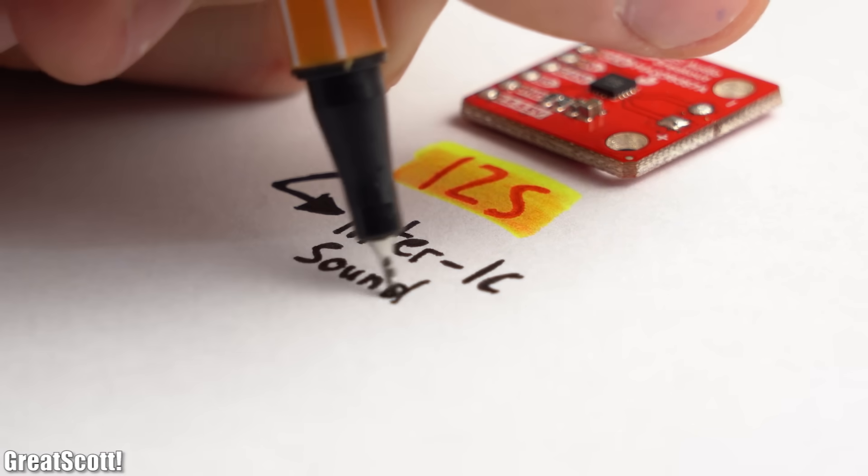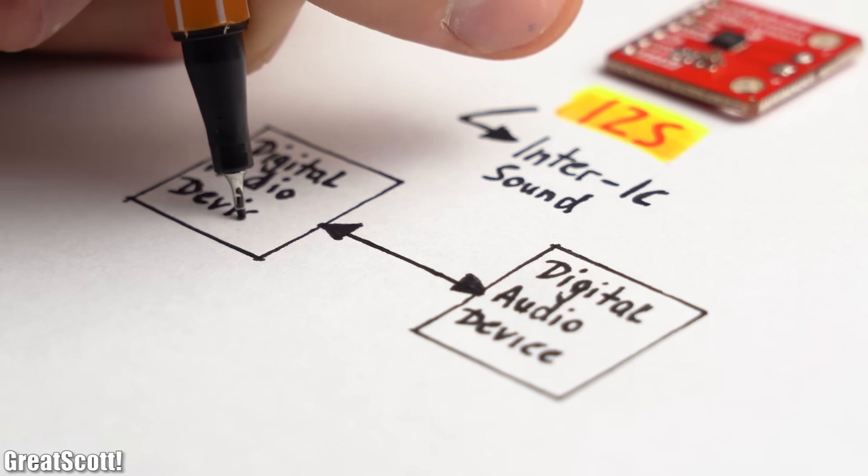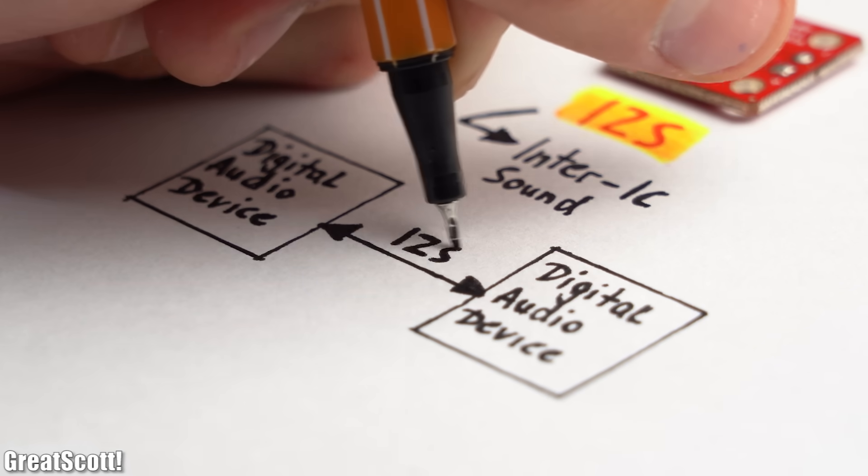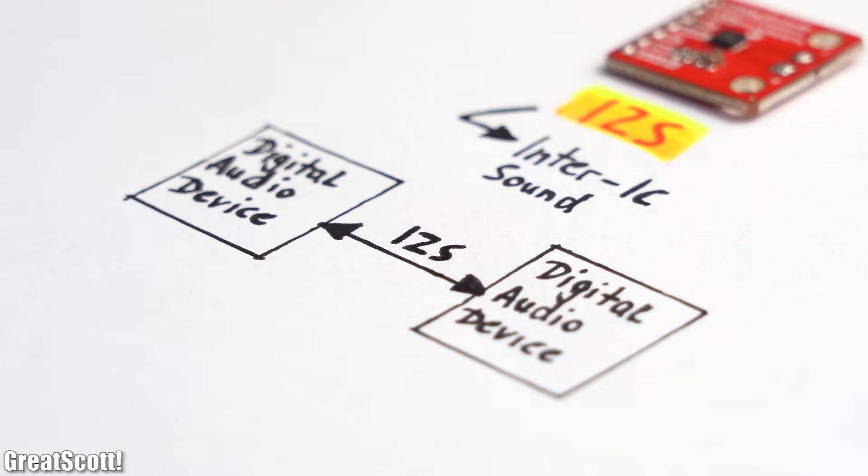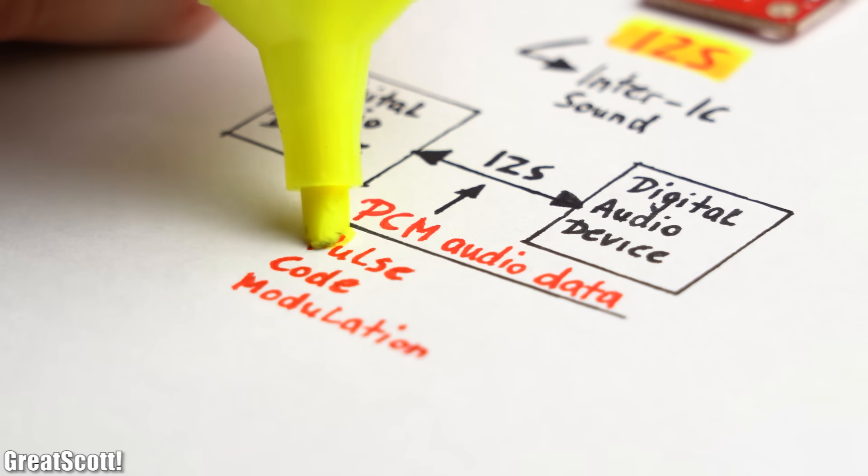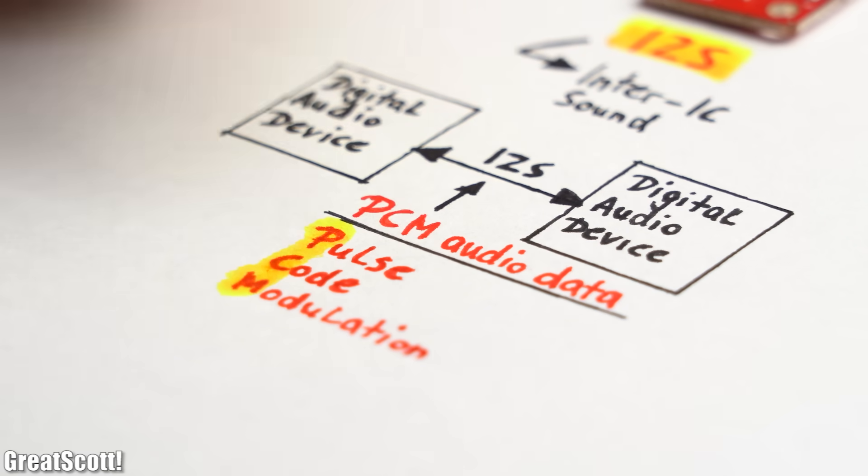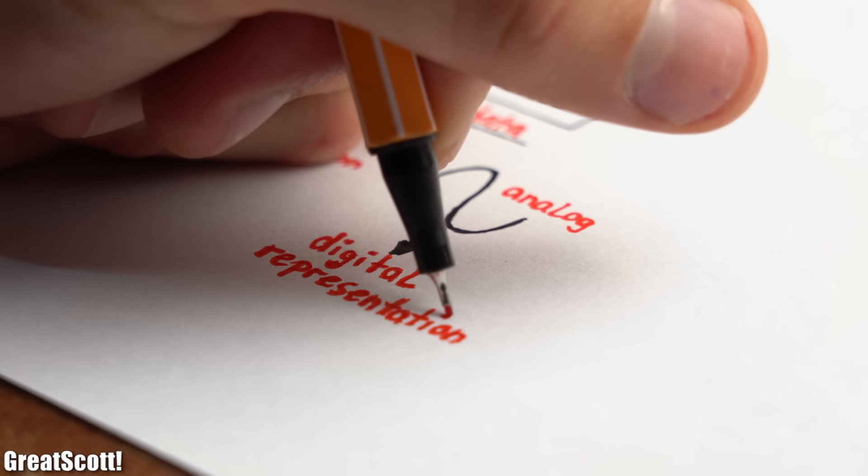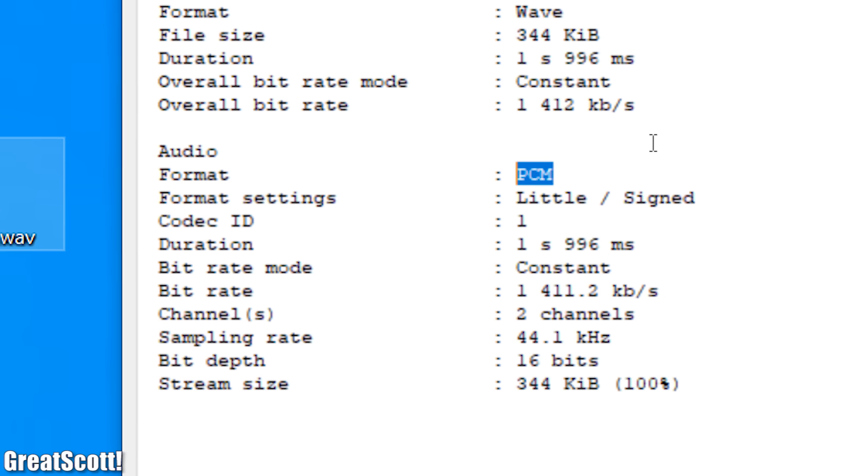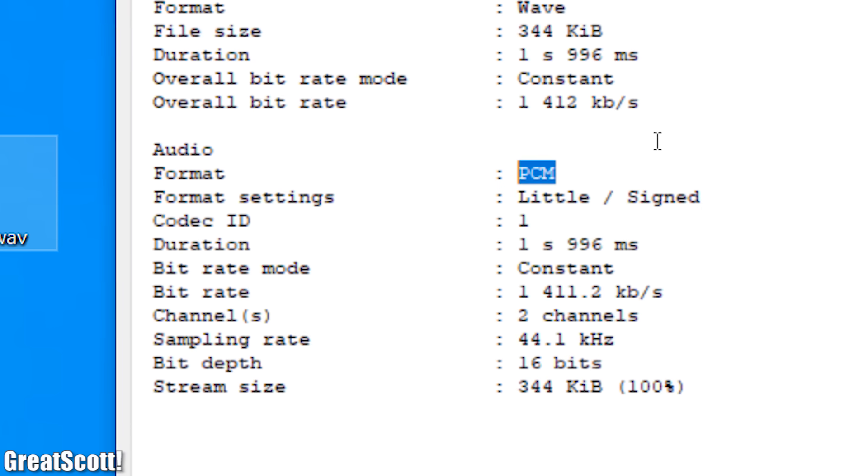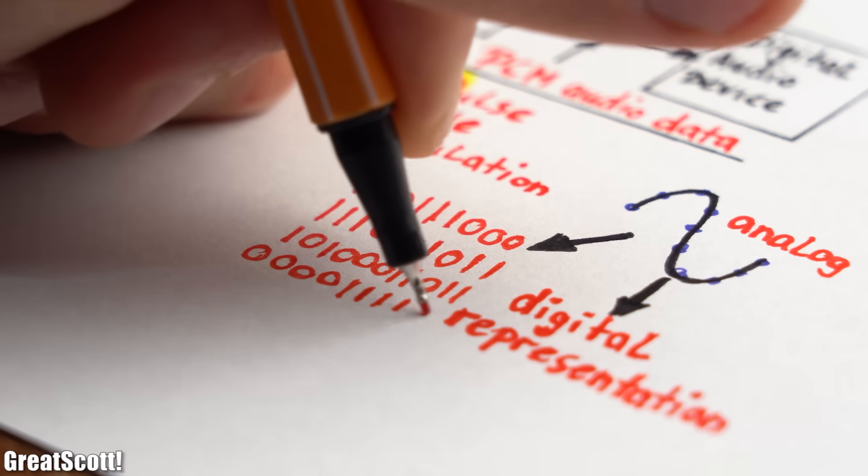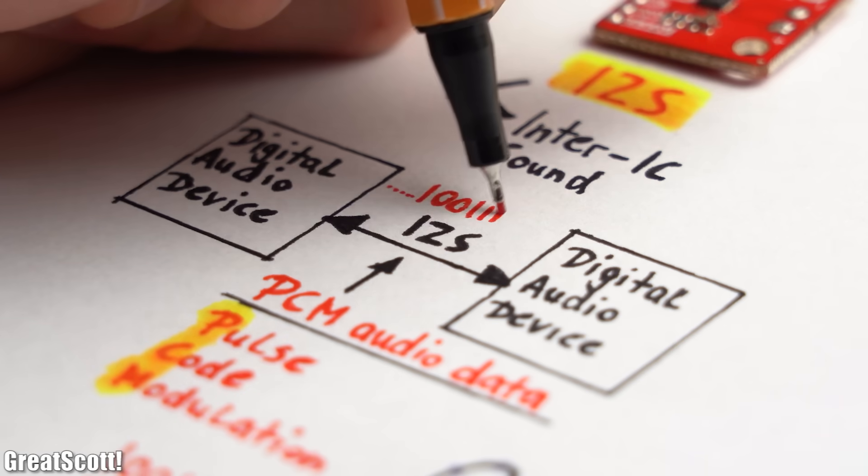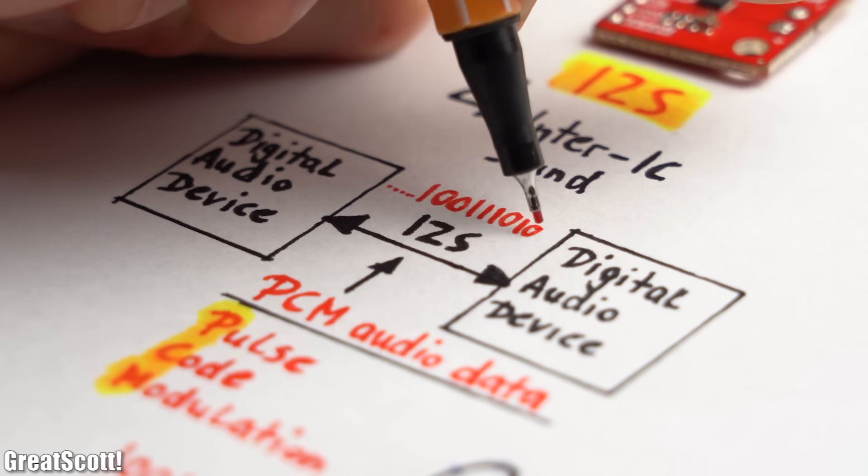I2S stands for inter-IC sound and it is an electrical serial bus interface used for obviously connecting digital audio devices. It communicates PCM audio data which stands for pulse code modulation, and that is a method to digitally represent sampled analog signals. Which is for example used by our dot wave sound file. It basically stores the binary values of all the sampled analog voltage values in it. And that is basically what we want to send around with I2S.